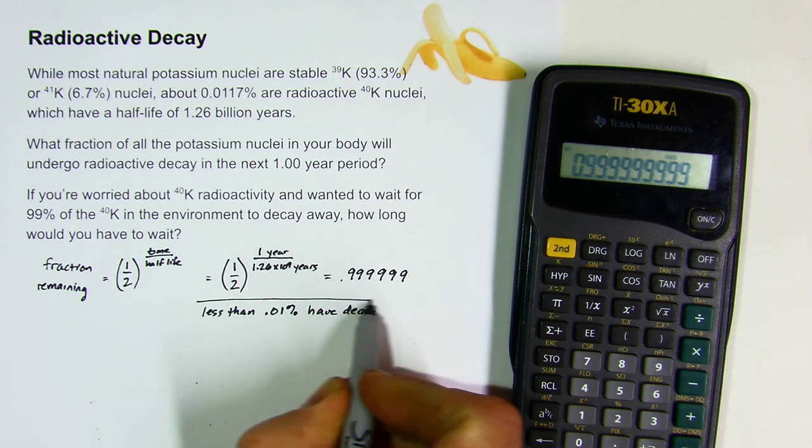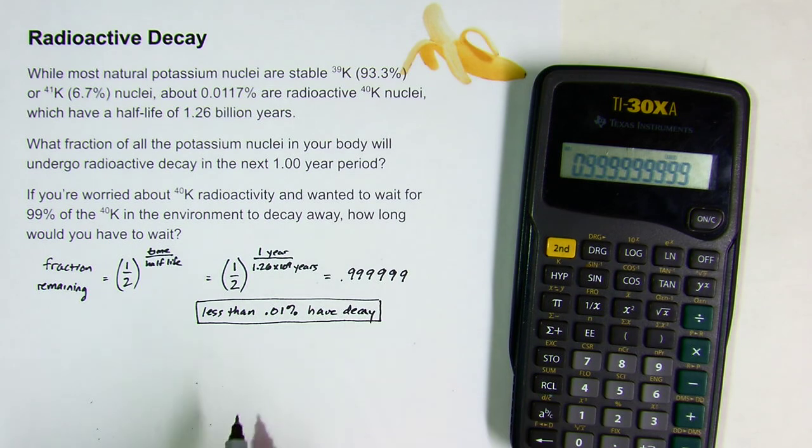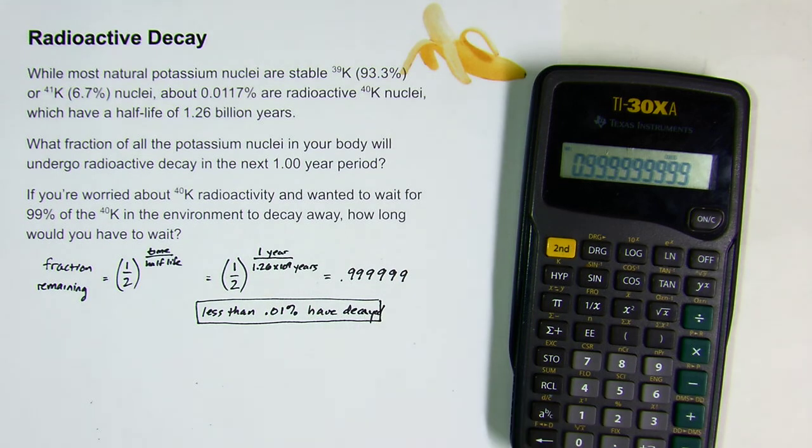So already, one hundredth of a percent of the potassium in a banana is radioactive in the first place, and then of those less than one hundredth of a percent have decayed after a one-year period.